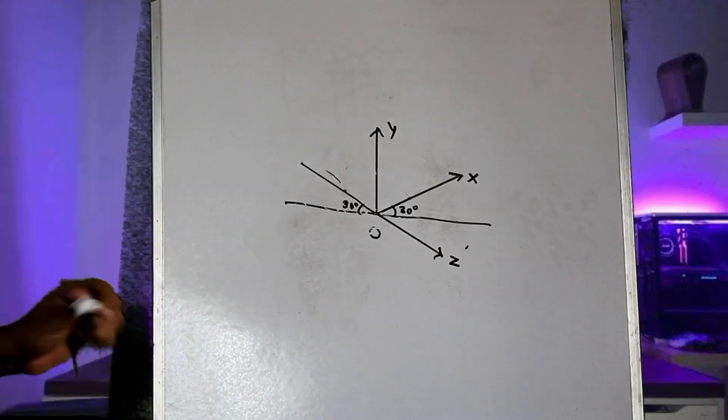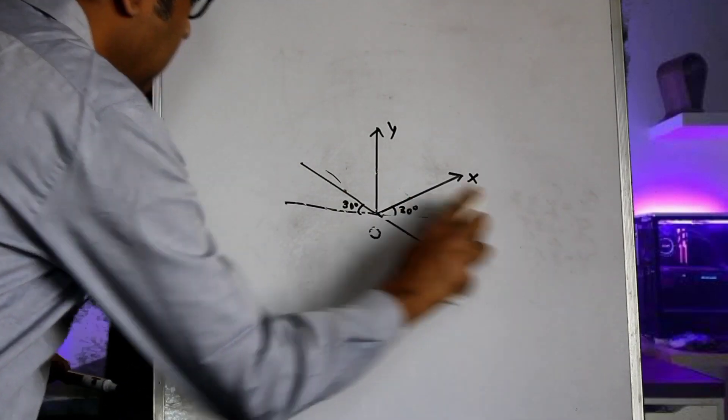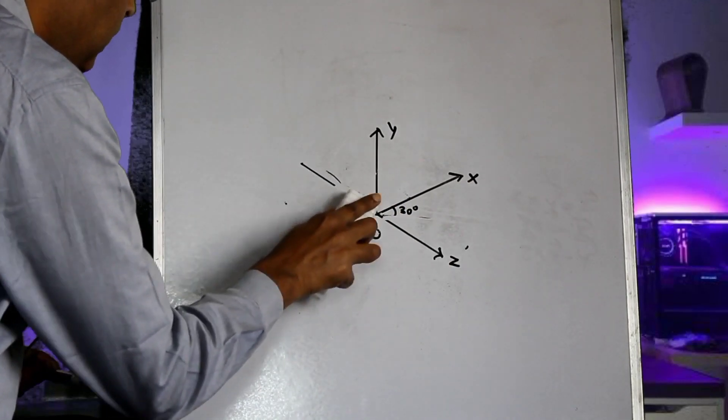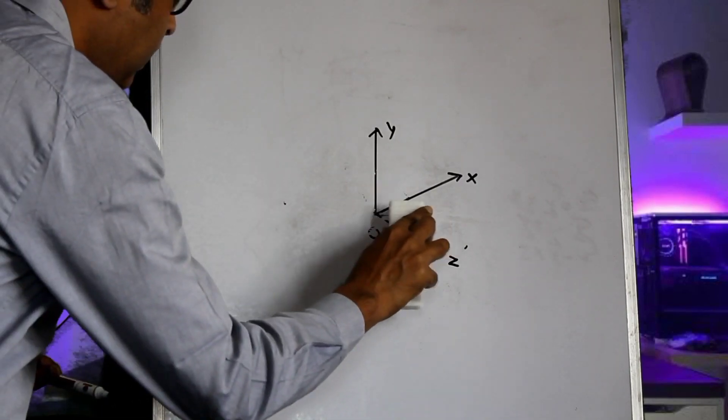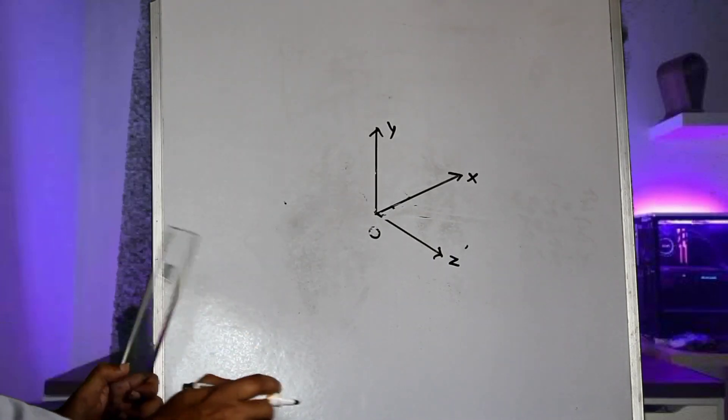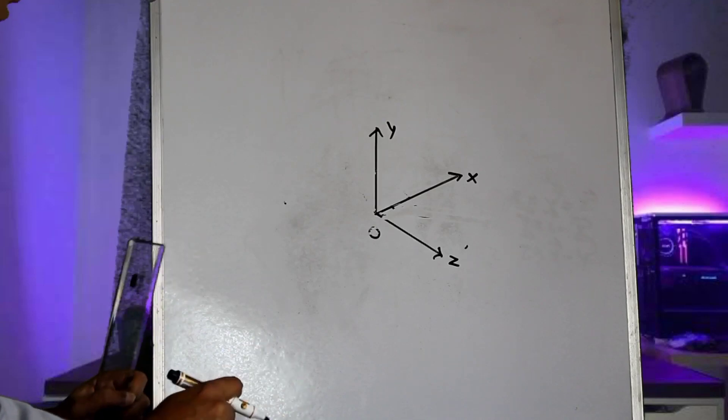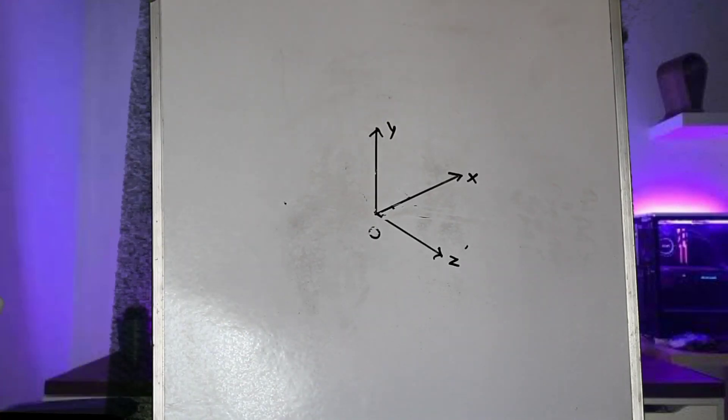So if we now remove these horizontal lines and the negative z direction, this would give us the isometric view of the global axis system. Now as you would understand, in the isometric view...